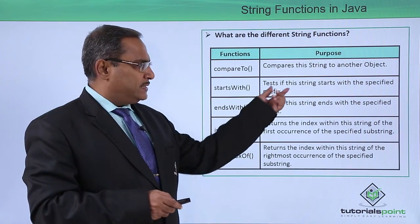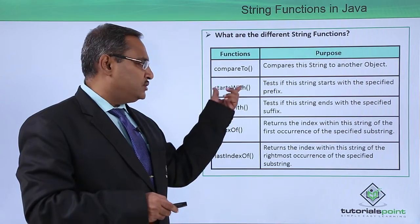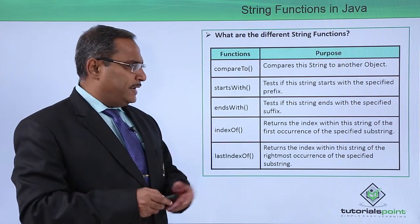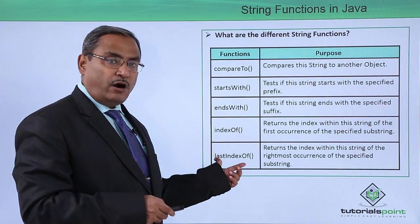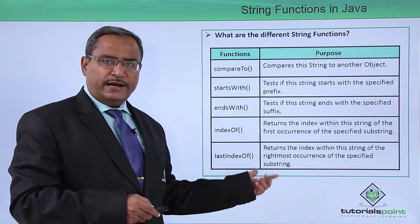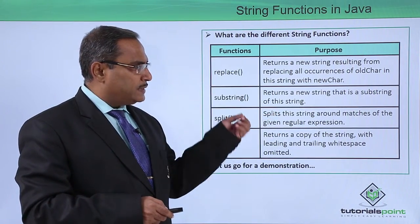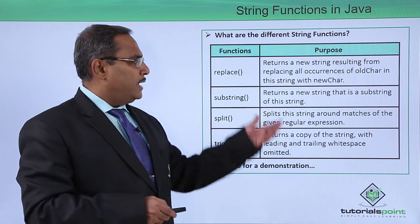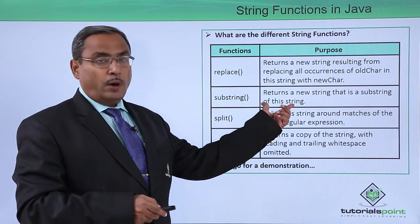startsWith() tests if this string starts with the specified prefix. endsWith() does just the reverse — it tests if this string ends with the specified suffix. indexOf() returns the index within this string of the first occurrence of a specified substring. lastIndexOf() returns the index within this string of the rightmost occurrence of the specified substring. replace() returns a new string resulting from replacing all occurrences of the old character sequence with the new one. substring() returns a new string that is a substring of this string.